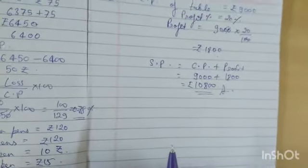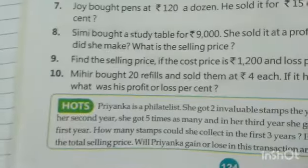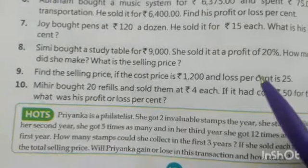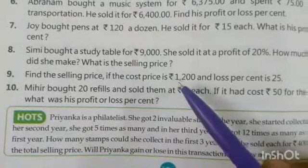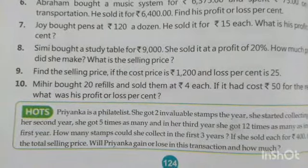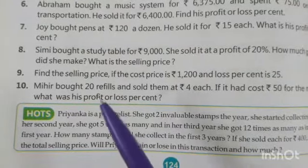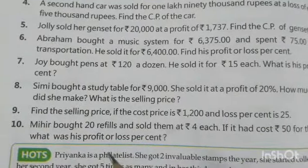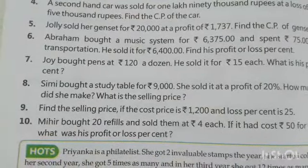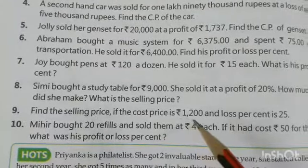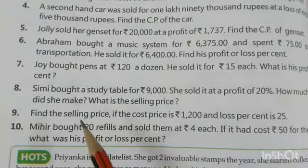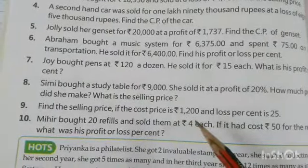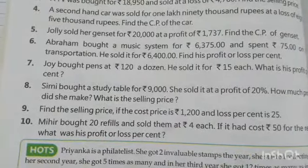Question number 9. Find the selling price if the cost price is rupees 1,200 and loss percentage is given at 25 percent. Find the loss value: 1,200 into 25 by 100. Since there is a loss, cost price is greater than sell price. So sell price equals 1,200 minus the loss value.